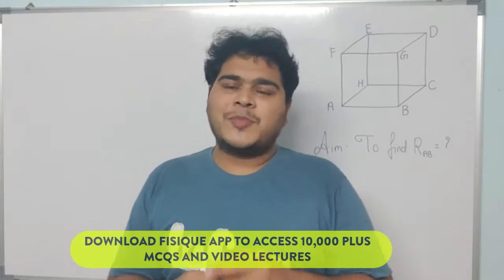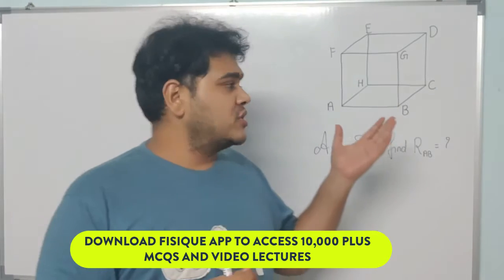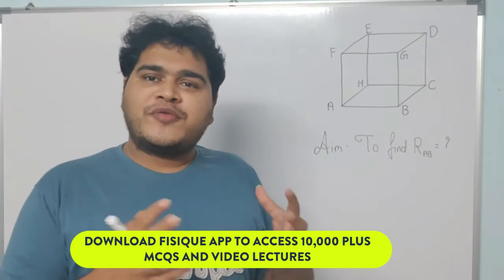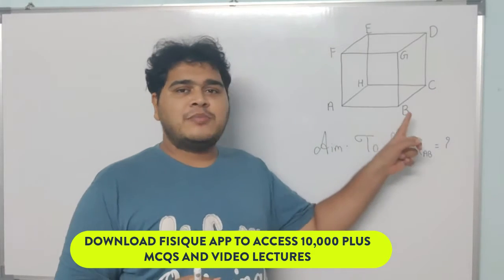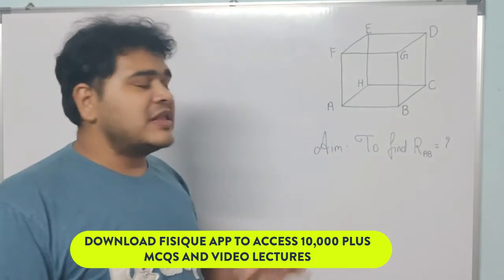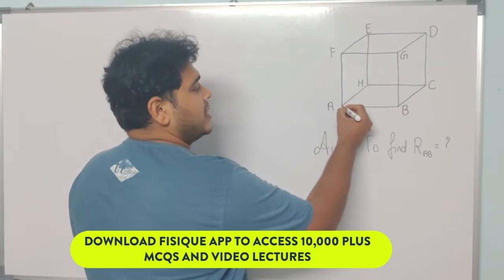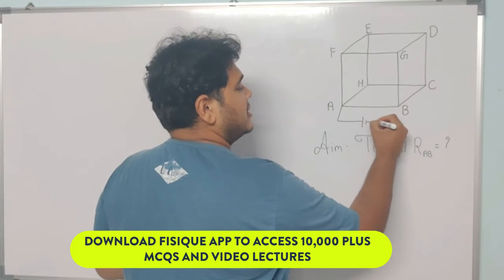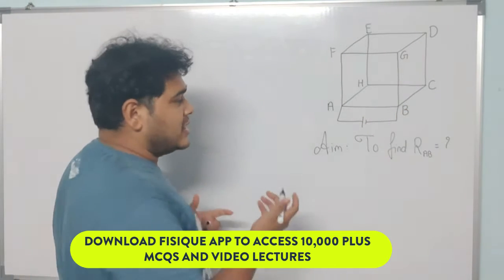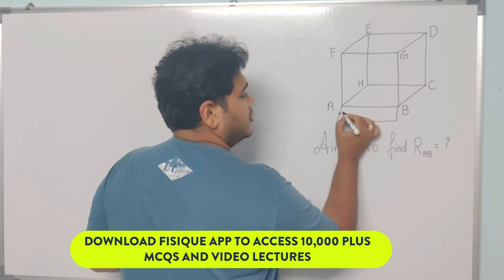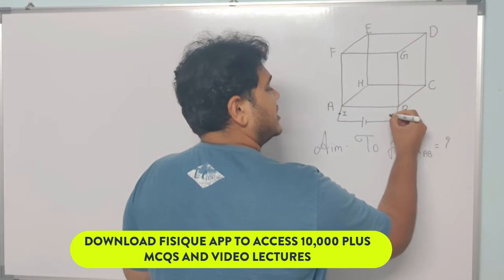Now we enter into the third part where we want to find the equivalent resistance for this cubic arrangement of resistances for the two adjacent corners, which are point A and point B. To find the resistance between point A and point B, we need to connect a battery across points A and B, so the current which enters the circuit is I and the current which exits the circuit is also I.